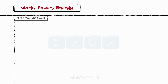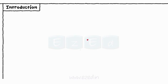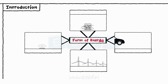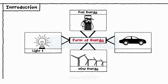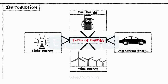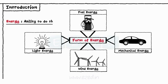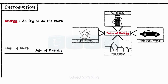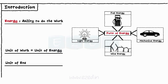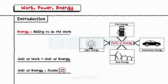Let's start with the introduction first. In our day-to-day life, we come across many examples of energy and its different forms. For example, a bulb is an example of light energy, a car is an example of mechanical energy, etc. This gives us the definition of energy as the ability to do work. As per the definition, the unit of energy and work is the same — joules, represented by capital J.